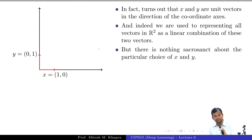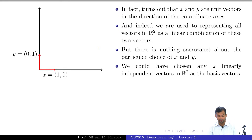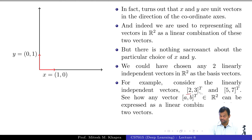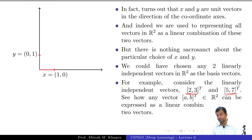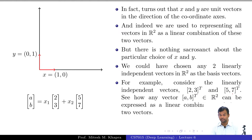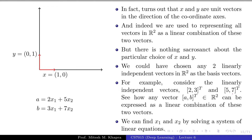There is nothing sacrosanct about x and y — I could have chosen just about any other axis. We could choose a different set of vectors as our basis, as long as they are linearly independent and any vector in R² can be expressed as a linear combination of them. Given a vector (a,b), to express it as a linear combination of those two basis vectors, you solve a system of linear equations to find the values of x₁ and x₂.